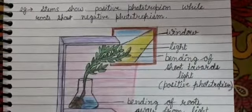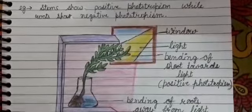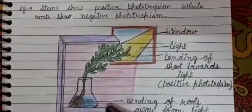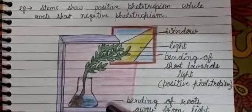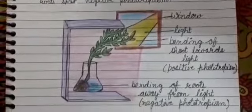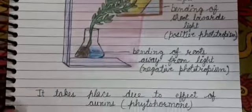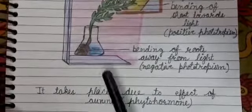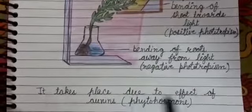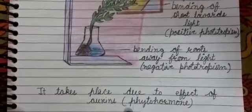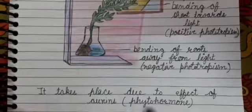This diagram is very important and is drawn in your NCERT, so you have to practice it. This bending of stem and roots takes place due to the effect of auxins — phytohormones. So this movement takes place due to the effect of auxins.